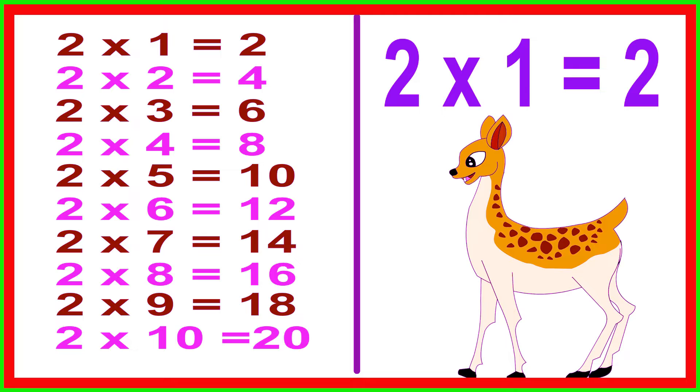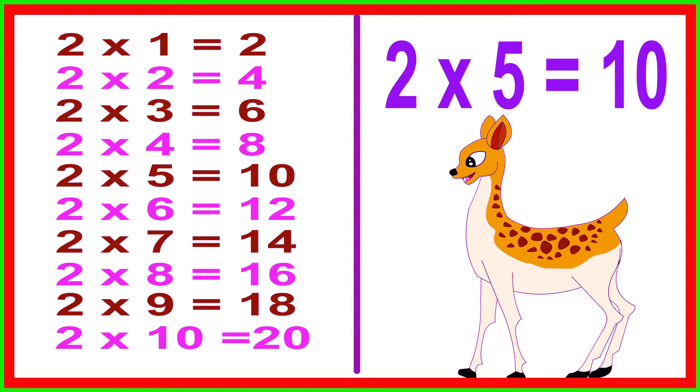2 times 1 equals 2, 2 times 2 equals 4, 2 times 3 equals 6, 2 times 4 equals 8, 2 times 5 equals 10.